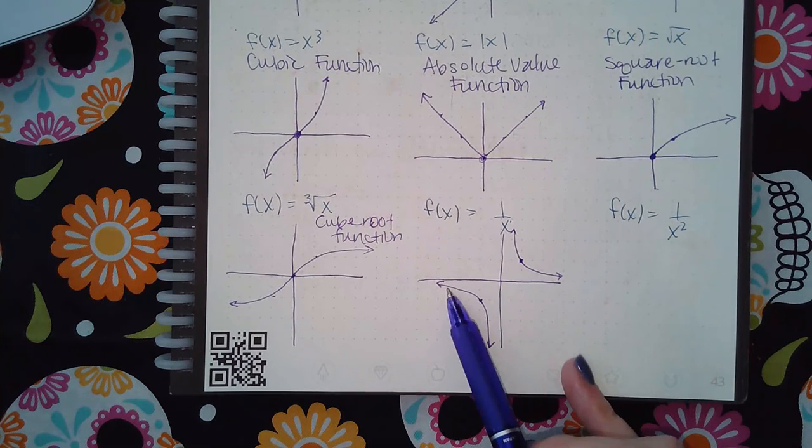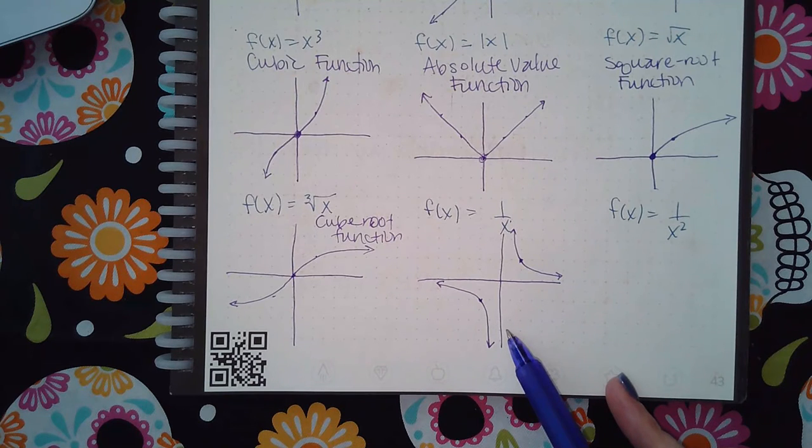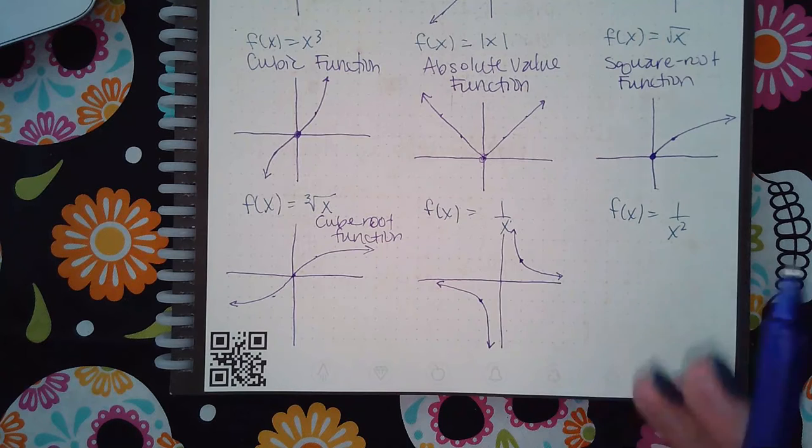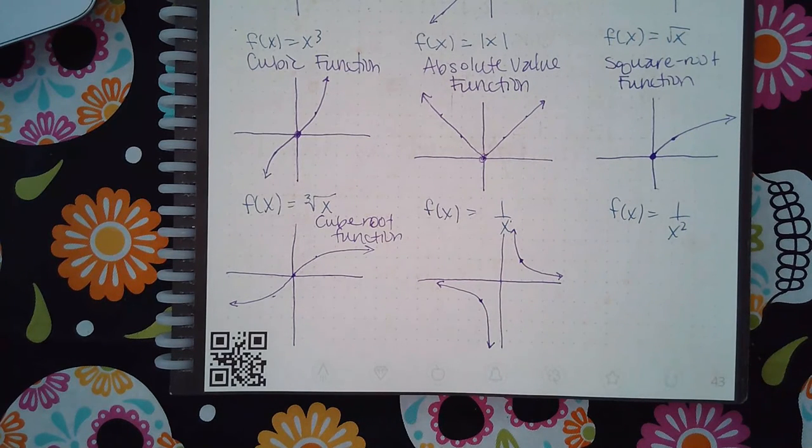And this piece will never cross the y-axis, this piece will never cross the x-axis, this piece will never cross the x-axis, and this piece will never cross the y-axis. These are called asymptotes, and when we get into rational functions we'll learn a whole lot more about asymptotes.